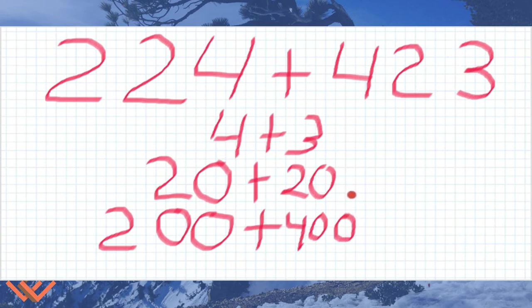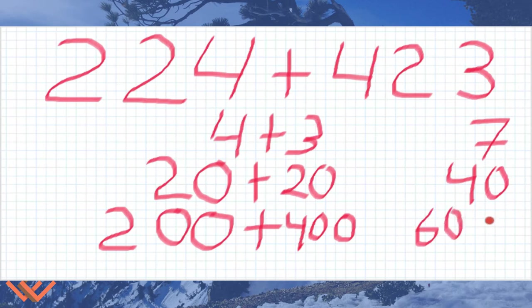4 plus 3, we can say that's a small double. There's 3 plus 3 plus 1 more. So that's 6 plus 1 equals 7. We have 20 and 20, you can also look at that as 2 and 2 tens. So that's 4 tens, which is 40. And then we have 200 and 400. We're adding up the hundreds, so it's going to be 2 plus 4, which is 600. So we have partial sums.